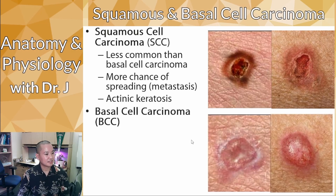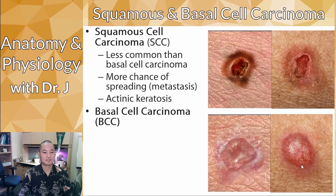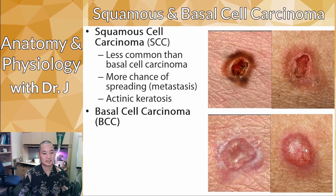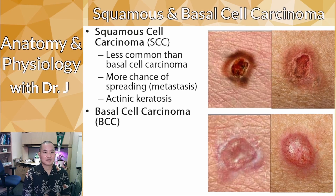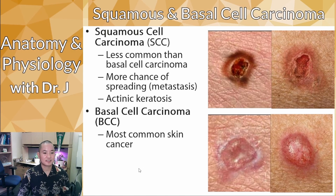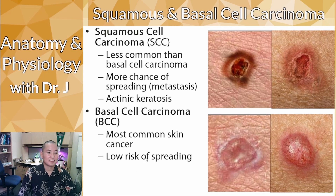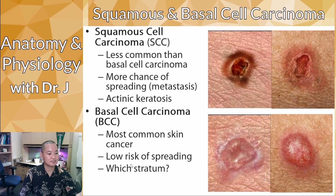Compared to the open, raw-looking squamous cell carcinoma, basal cell carcinoma looks kind of intact — it has a pearly, pinkish, swollen appearance with blood vessels visible. This is how it looks in someone with fair skin. This is the most common skin cancer, and unlike squamous cell carcinoma it has a low risk of spreading, so even though it's growing as a small tumor it's typically benign and doesn't spread.